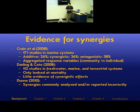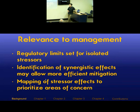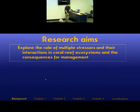The study from coral reefs in 2010 found that synergies were commonly analyzed or recorded incorrectly — wrong experimental designs or incorrect interpretation of statistical results. Multiple stressors are hugely relevant to management: regulatory limits for pollutants are often set in isolation without considering how one pollutant in conjunction with another might cause worse effects. Identifying synergistic effects might allow for more efficient mitigation, and geographically mapping stressor effects can help identify areas of concern.